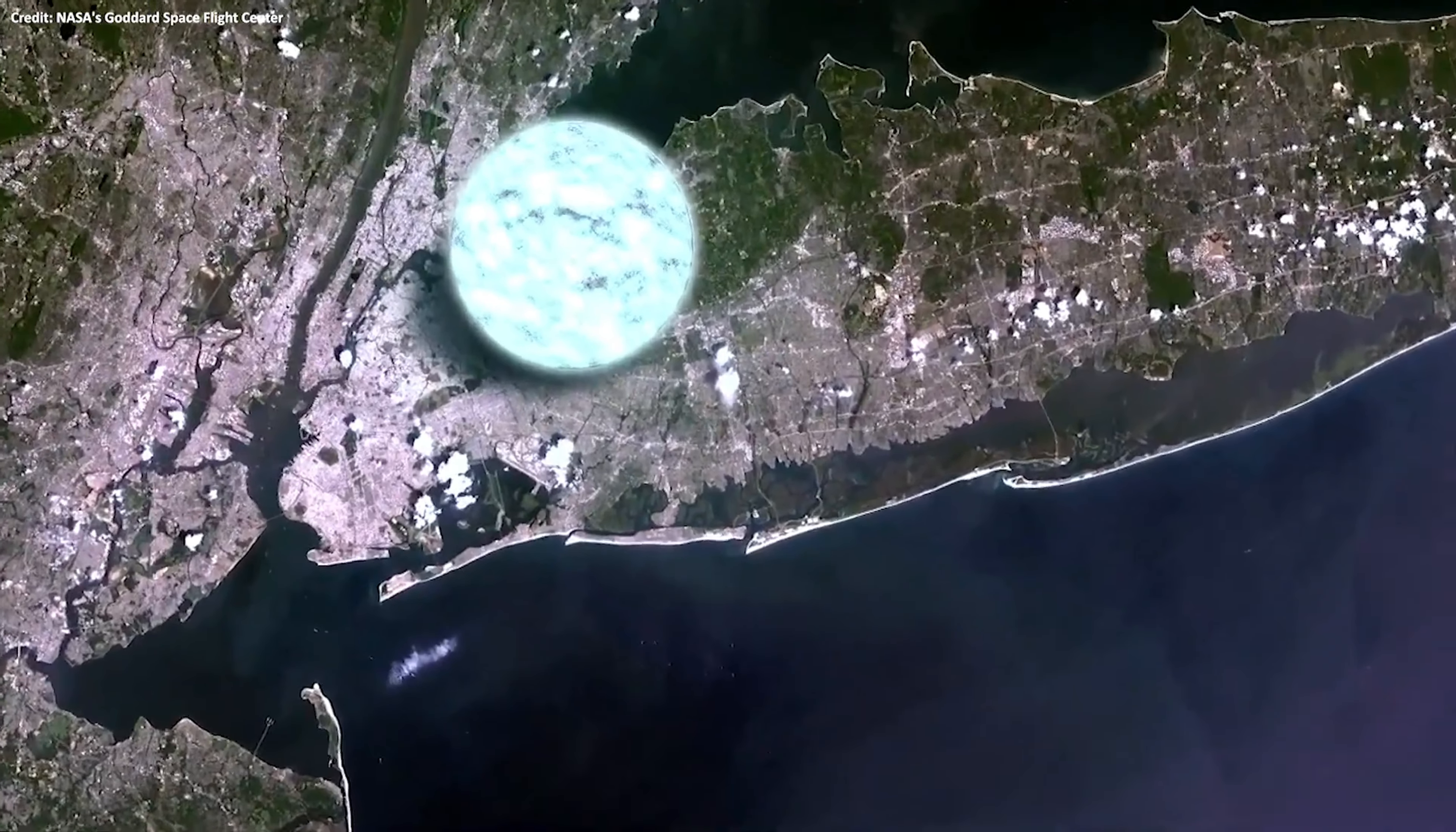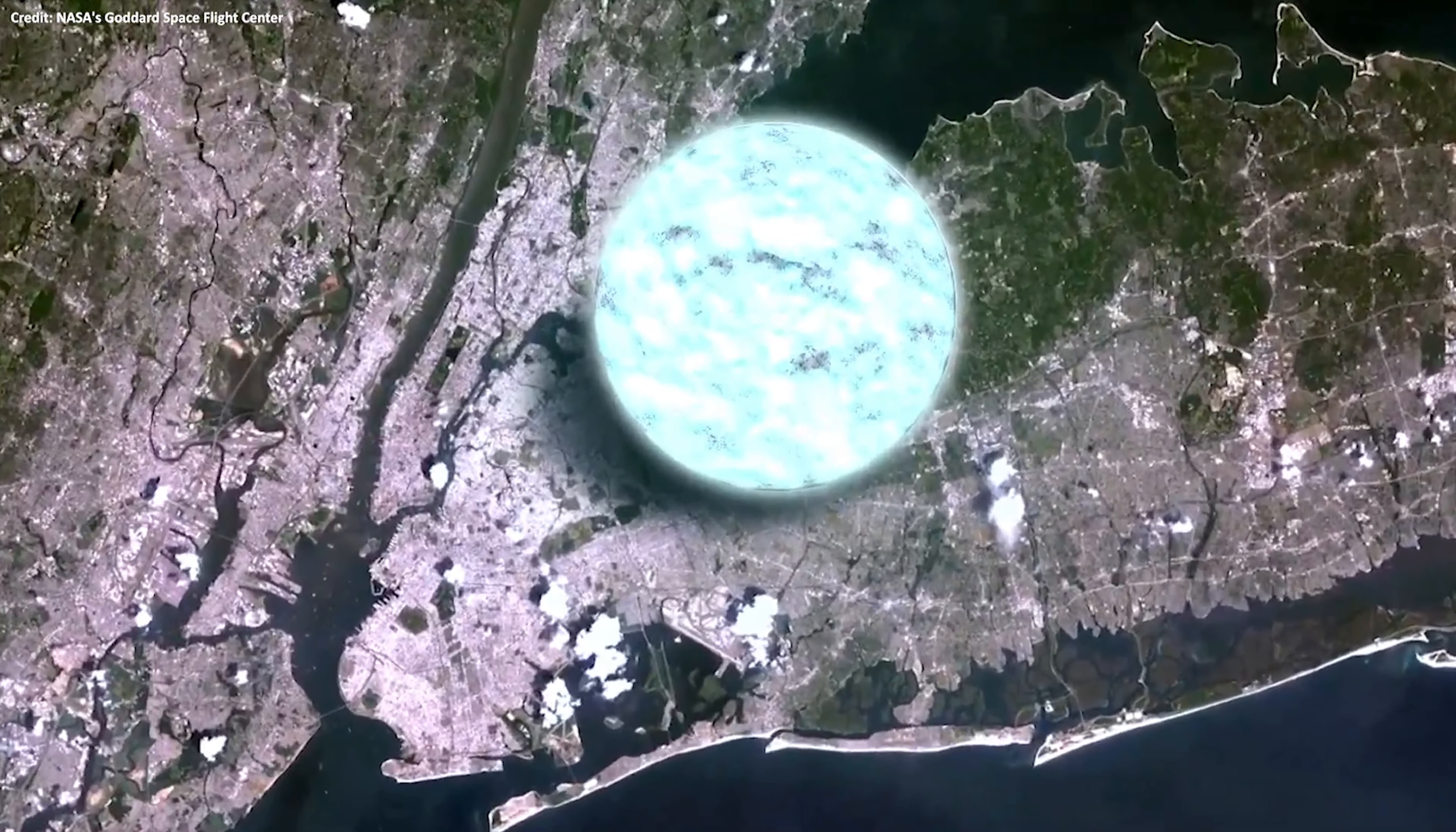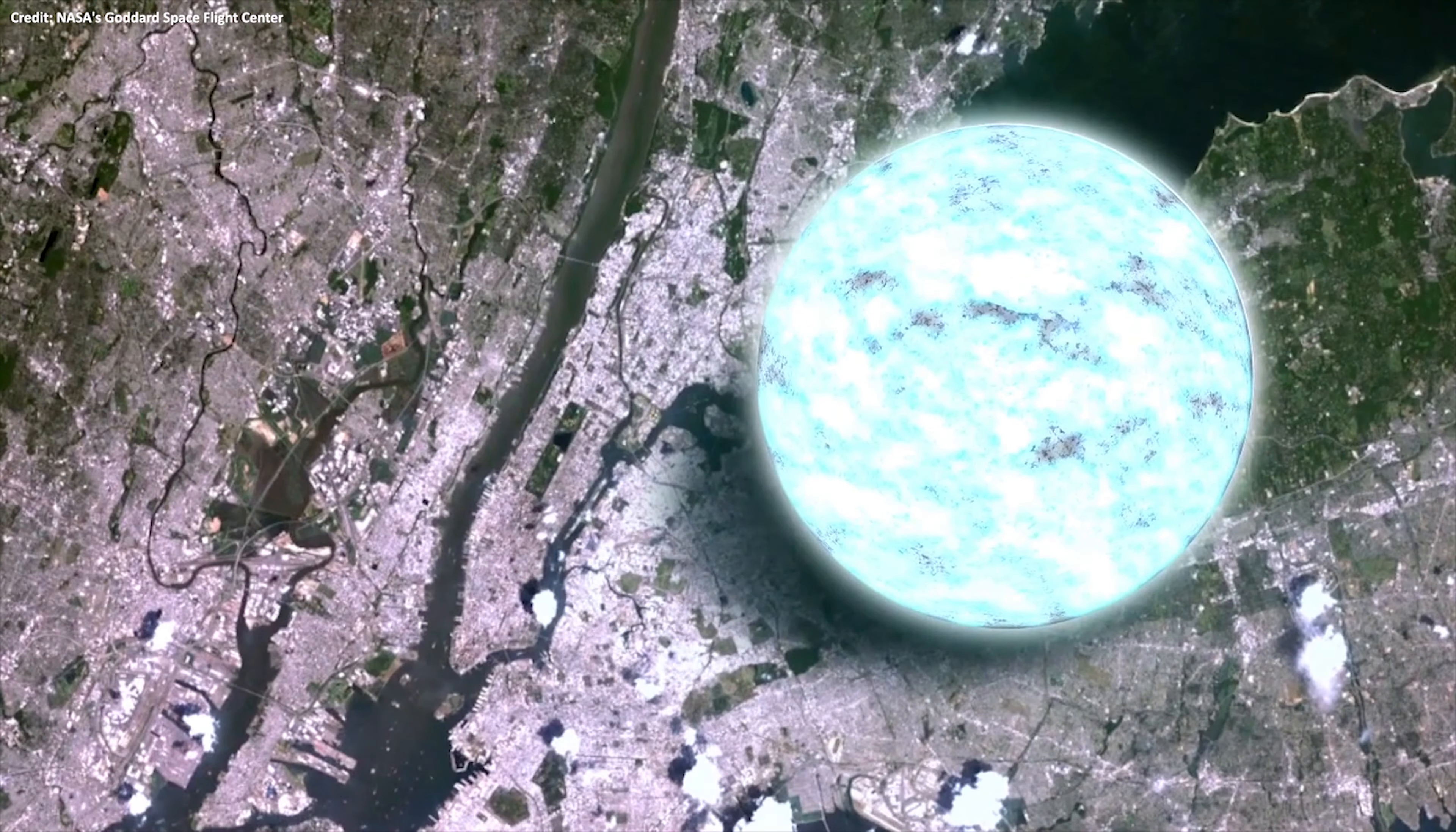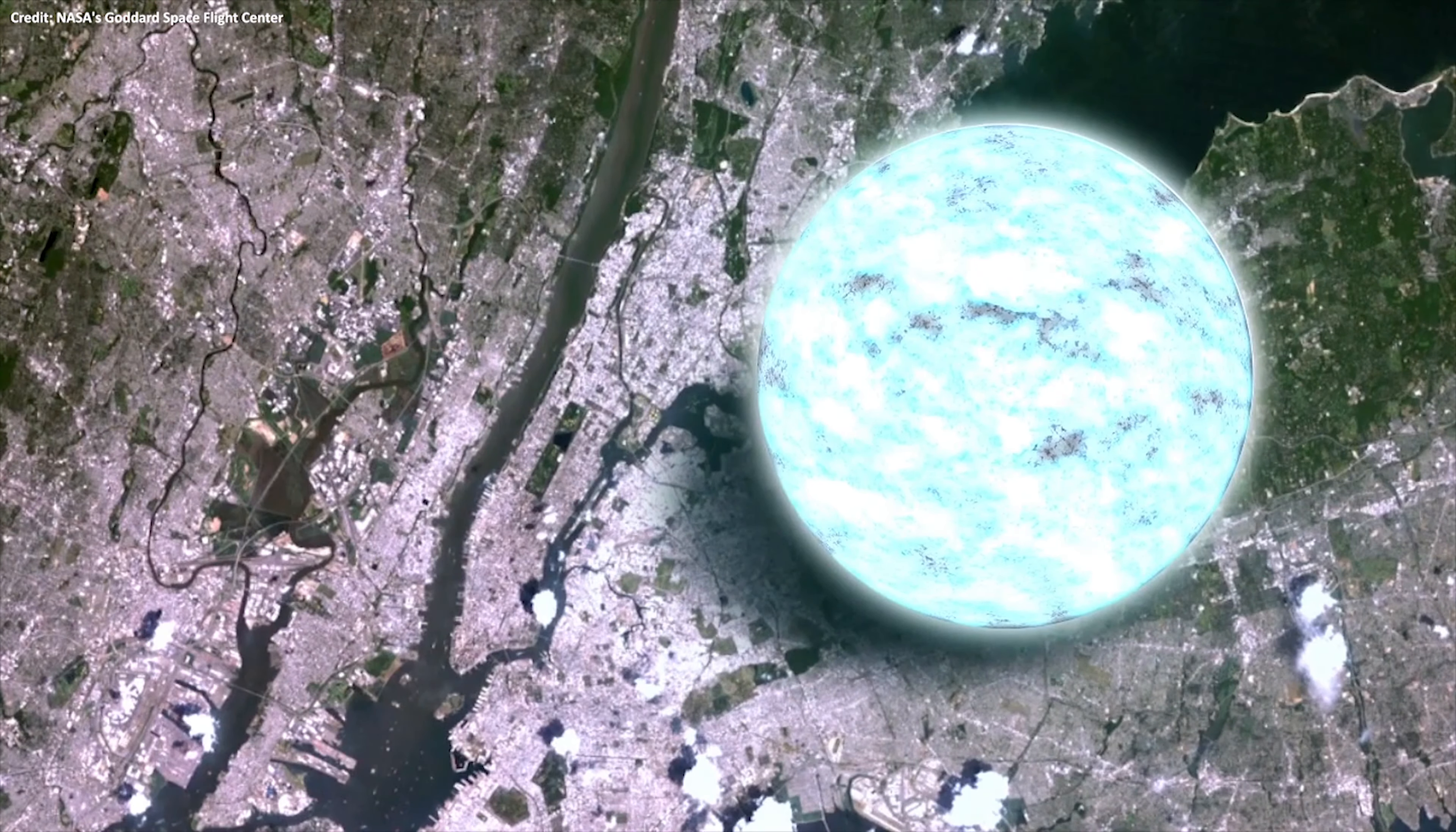Neutron stars are exactly what they sound like: incredibly dense spheres, about the size of a city, but containing more mass than our entire sun. How is this possible?